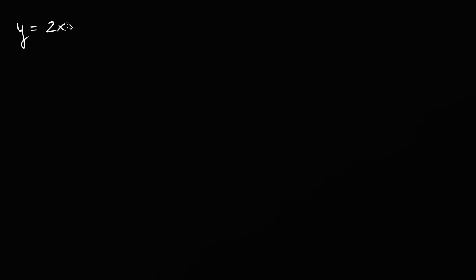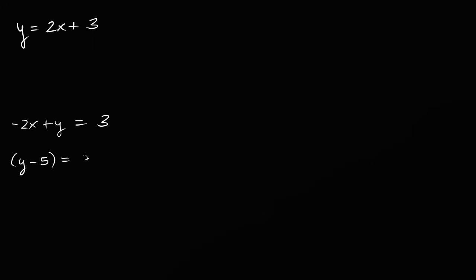There are a lot of different ways that you can represent a linear equation. For example, if you had the linear equation y is equal to 2x plus 3, that's one way to represent it, but you could represent this in an infinite number of ways. You could subtract 2x from both sides and write this as negative 2x plus y is equal to 3. Or you could write y minus 5 is equal to 2 times x minus 1. These are all equivalent — you can get from one to the other with logical algebraic operations.